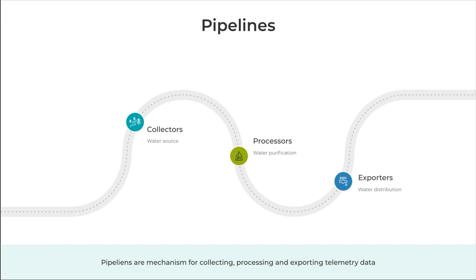And then finally you have exporters. In the analogy, this is the water distribution phase. Once water has been purified, it is distributed to homes and businesses through a network of pipes. In open telemetry, the processed telemetry data is exported to various destinations — monitoring tools, analytics, storage systems, wherever that data is needed.